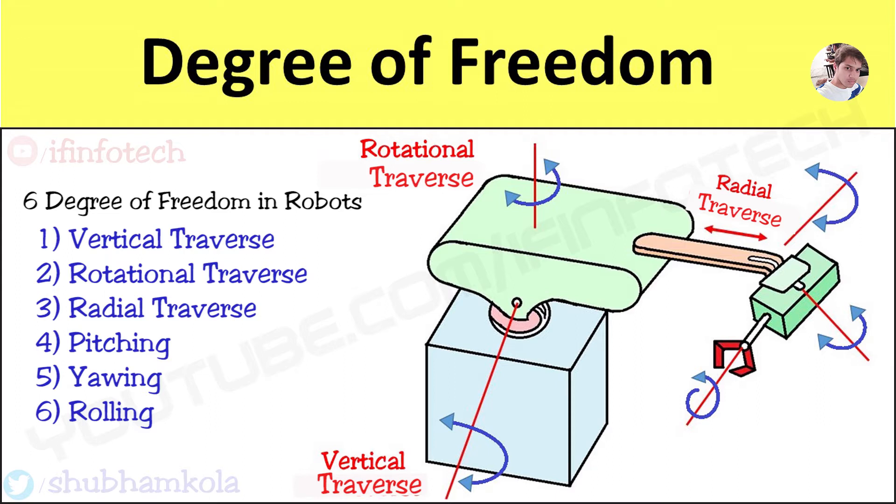Out of 6, 3 motions are arm and body motions and remaining 3 are wrist motions. Here, as you can see in the sketch, here is the body and this is the arm. Here is the wrist and here is the end effector at the end.